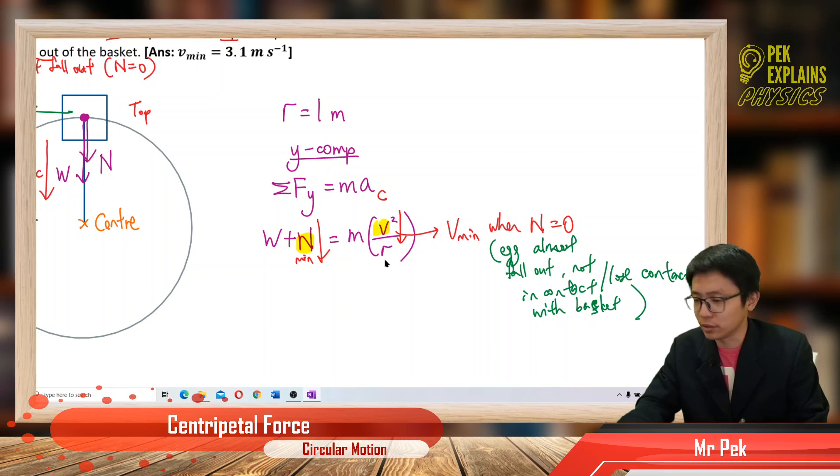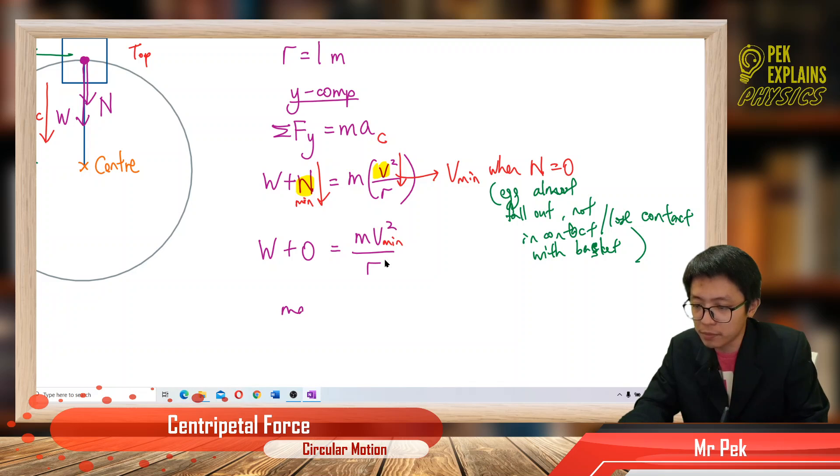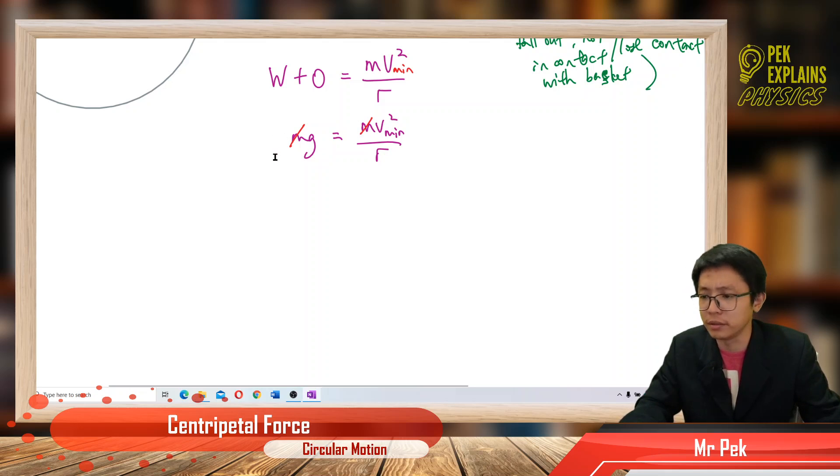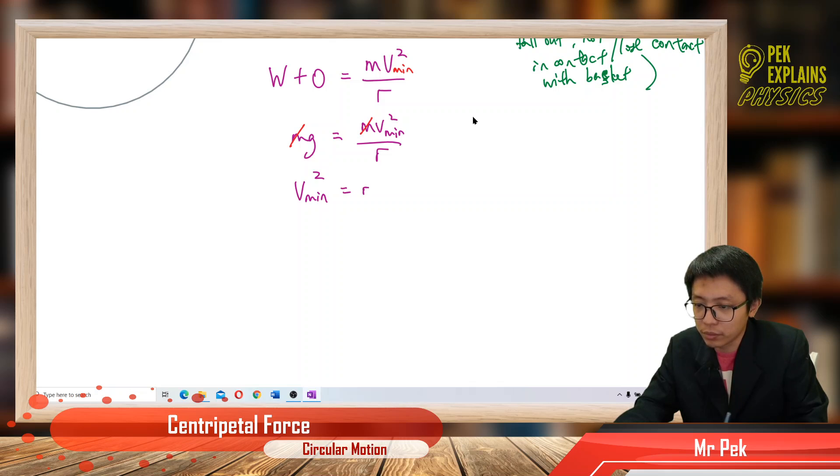So put N equal to zero. So what do we have? So W plus zero, we get mV_min² over r. Our W is mg. So we can cut the mass, we don't need the mass. You give the mass or not? It didn't give the mass. Never mind, you can cut the mass off. So sometimes not all information must be given because the variable can be cut off, no longer in the equation, no need to consider the value. So V_min² is equal to rg, so our minimum speed is equal to square root rg.